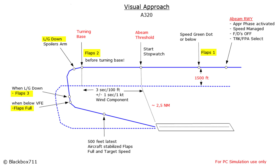Before reaching the downwind leg, you have to activate the approach phase, then set the speed managed, switch off the flight directors, and select track FPA on the FCU. You should also be in configuration flaps one and let the speed drop down to S speed.